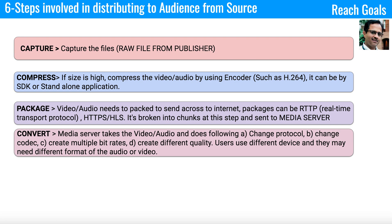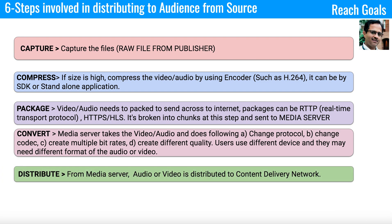Once packaging is done, the files are sent to the media server where several operations are performed: changing the protocol, changing the codec, creating multiple bitrates, and creating files of different quality. We need different quality levels because users have different devices — some may have 720p capability, others high definition. The media server plays a major role in converting files into different formats so they can be distributed to users based on their device's capability.